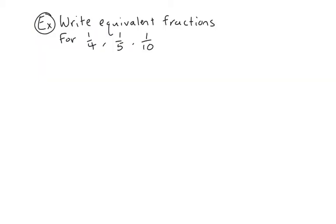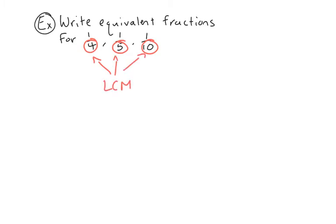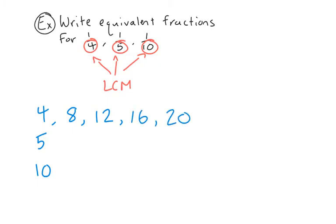We're going to look at one last question. We want to write equivalent fractions for 1 over 4, 1 over 5, and 1 over 10. The first thing we want to do is look at these denominators — 4, 5, and 10 — and find the lowest common multiple of 4, 5, and 10. Let's write these numbers down and start with 4: multiples are 8, 12, 16, 20. We'll stop there.